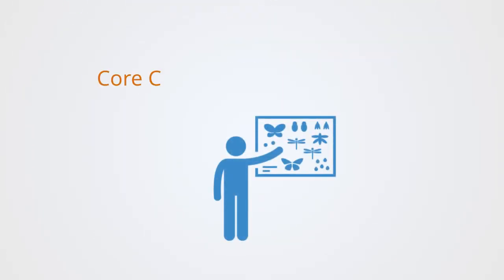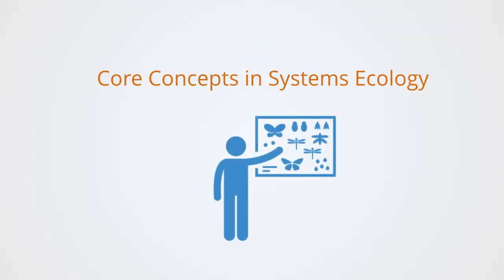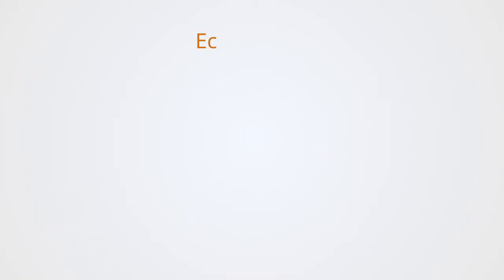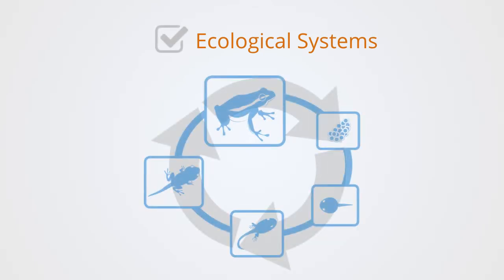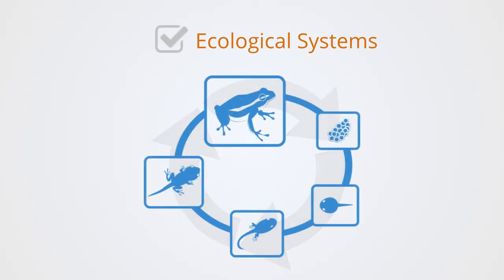This course is focused on providing you with the core principles and concepts in systems ecology and is broken down into three main sections. In the first section, we will be laying down the basics of systems theory in ecology as we talk about energetics, thermodynamics, emergent integrative levels, and ecosystem dynamics.